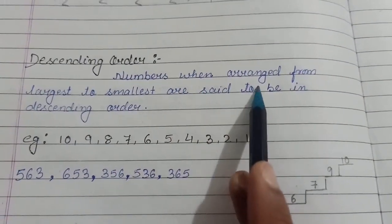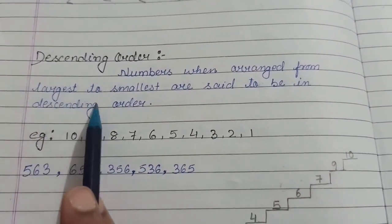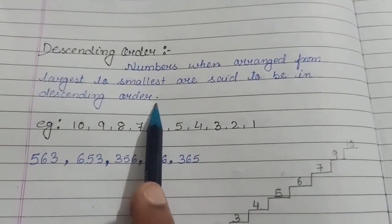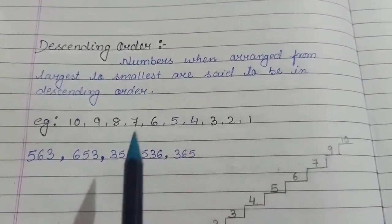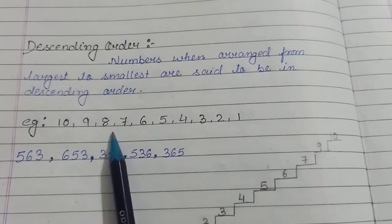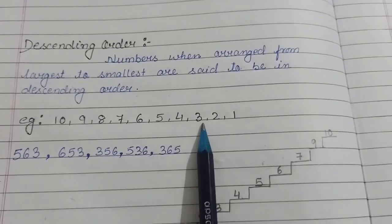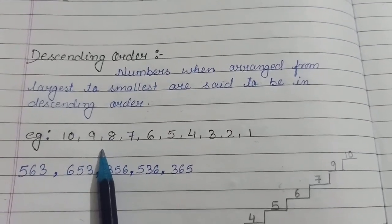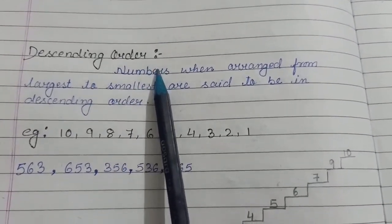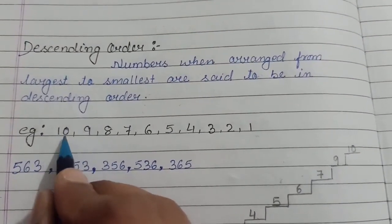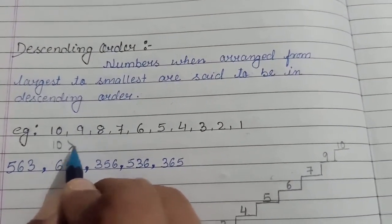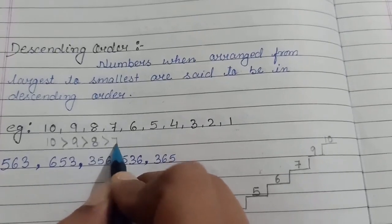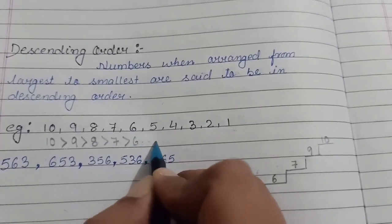Numbers when arranged from largest to smallest are said to be in descending order. It is totally reverse of ascending order. You can see here 10, 9, 8, 7, 6, 5, 4, 3, 2, 1. This is a backward counting and backward counting order shows descending order. You can see the sequence: 10 is greater than 9, and 9 is greater than 8, and 8 is greater than 7, 7 is greater than 6 and so on.